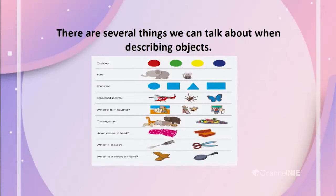Well done. Today, we are going to learn how to describe objects. To describe objects, I was talking about the size, the color, and what it is made of. There are several things we can talk about when describing objects, as you can see on the screen.